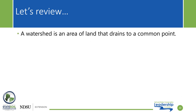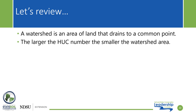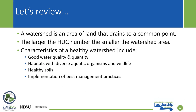Let's review. A watershed is defined as an area of land that drains to a common point — the example given was a bathtub. The larger the hydrologic unit code of a watershed, the smaller the watershed area. We discussed four characteristics of a healthy watershed: good water quality and quantity, which we monitor for; habitats with diverse aquatic organisms and wildlife, including fish, benthic macroinvertebrates, waterfowl, and other mammals; healthy soils, inclusive of the five principles of soil health; and implementation of best management practices, supported through various state and federal agencies in North Dakota.